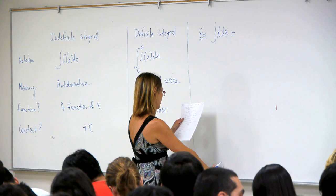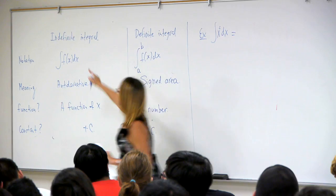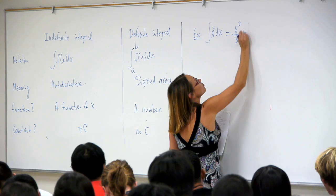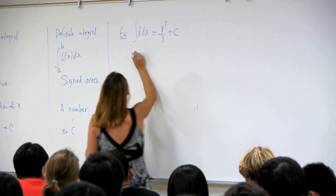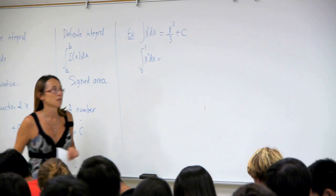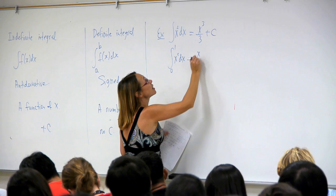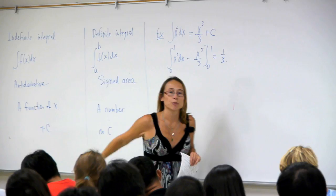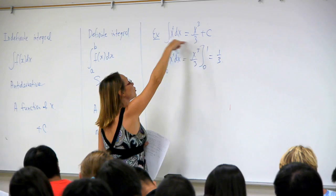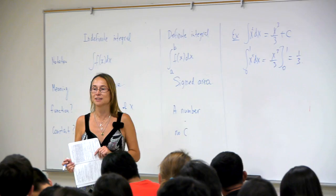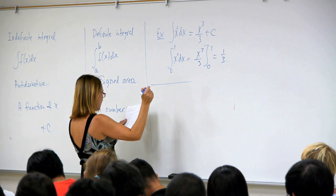Let's illustrate with examples. ∫x² dx has no limits, so it's an indefinite integral — the answer is x³/3 plus C, a function of x with an additive constant. For the definite integral from 0 to 1 of x² dx, we use that antiderivative: x³/3 evaluated from 0 to 1, which equals 1/3. Knowing the indefinite integral lets us evaluate the definite integral more quickly.